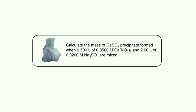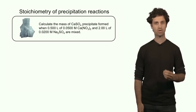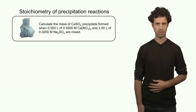In this example we're going to calculate the amount of calcium sulfate precipitate formed in this precipitation reaction. Here you see a picture of a calcium sulfate crystal. We can form a precipitate by mixing calcium nitrate with sodium sulfate, and the volumes and molarities of each of these solutions is already given in the question.